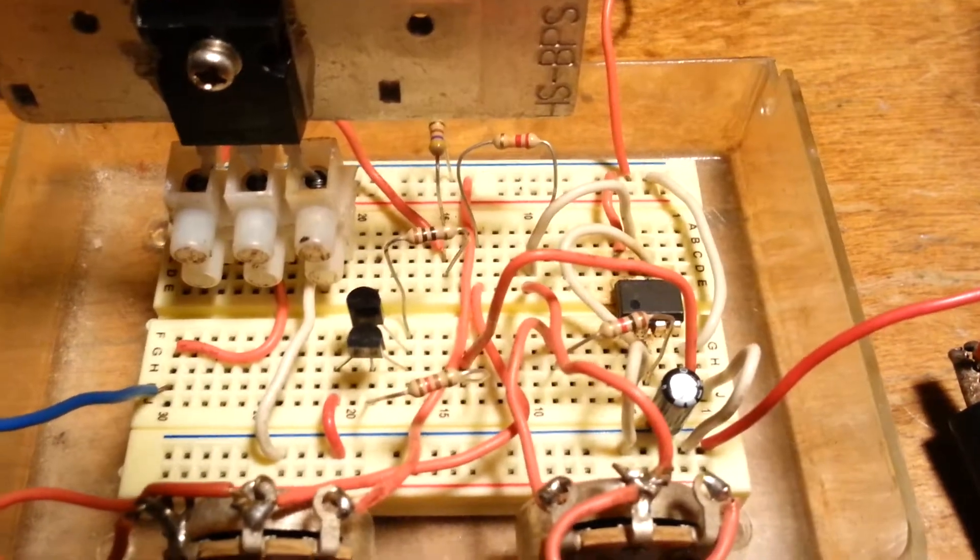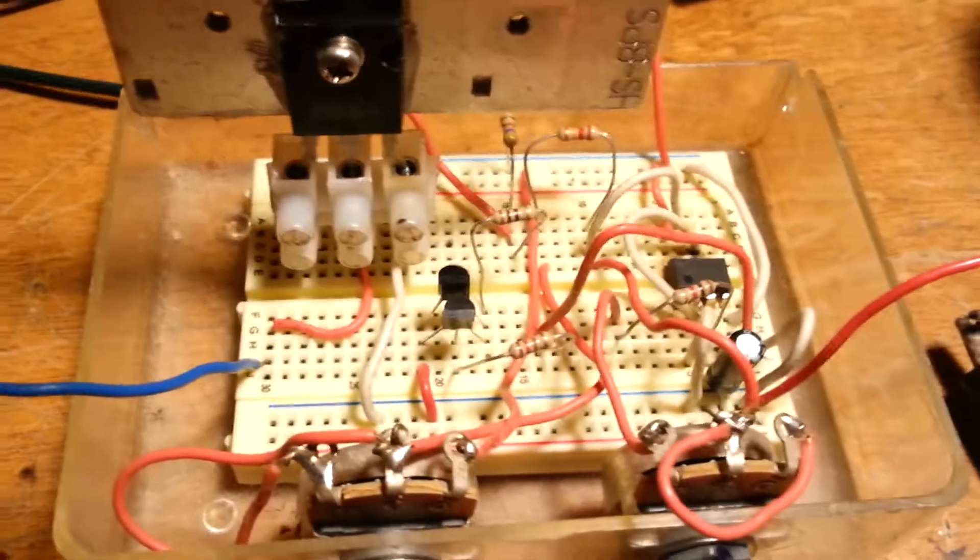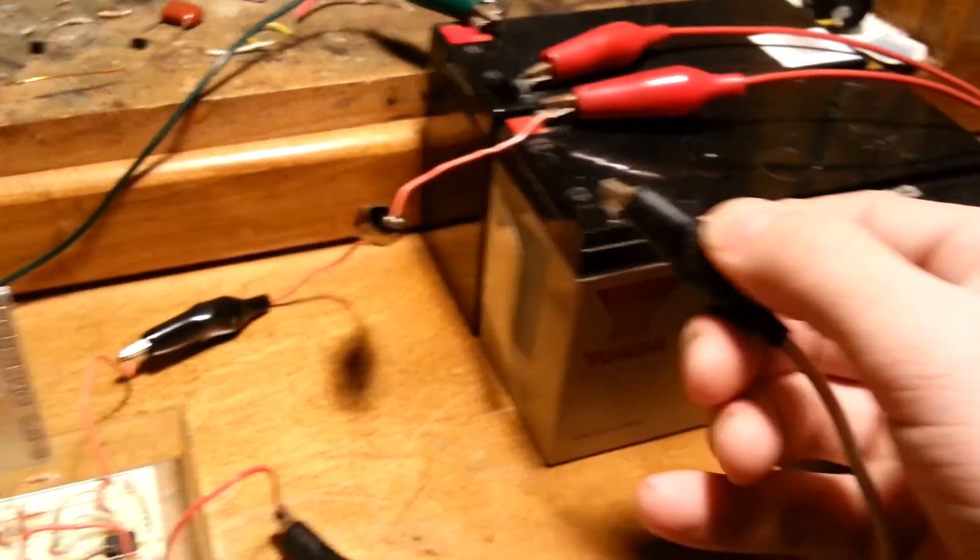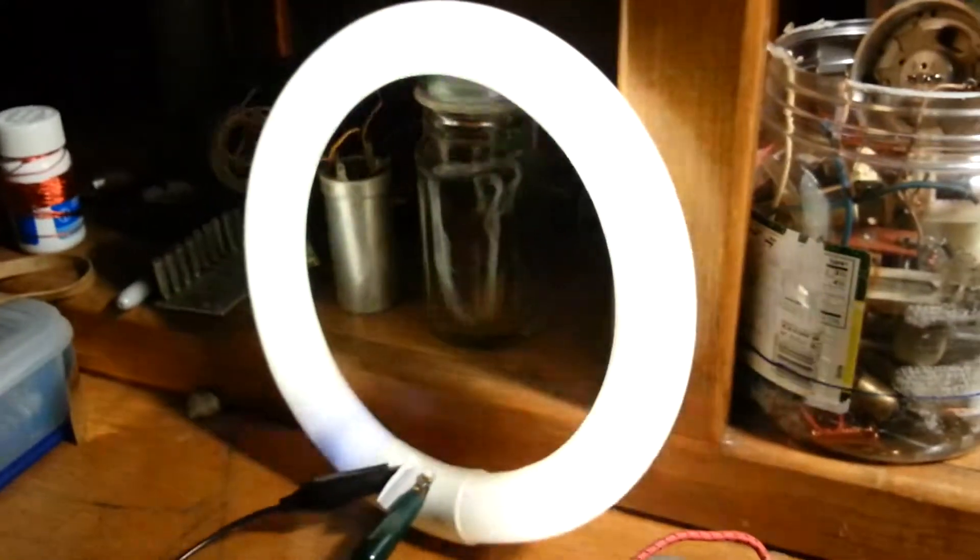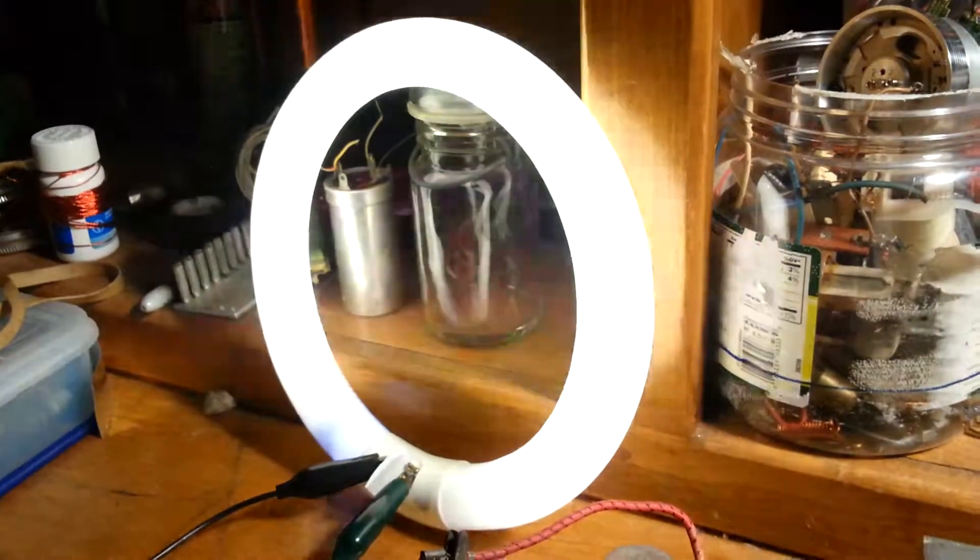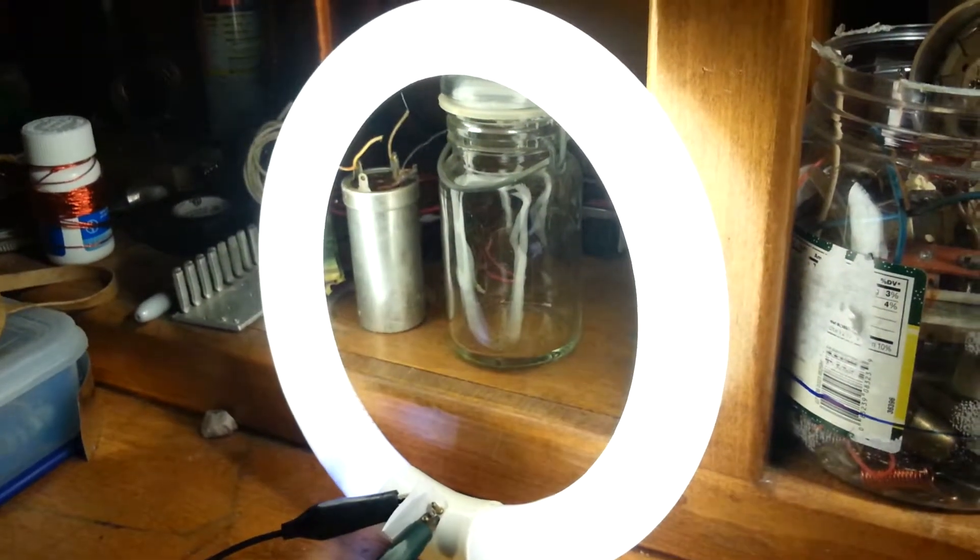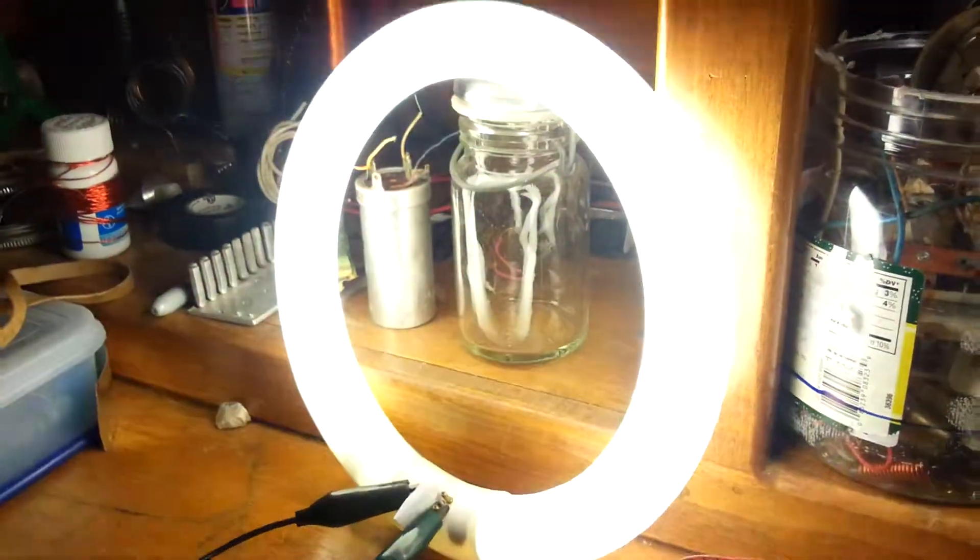Right now I'm currently running it on 24 volts. Let's see what it will do. Looks like it's working. Then we adjust the potentiometer here. There you go it's got really bright.